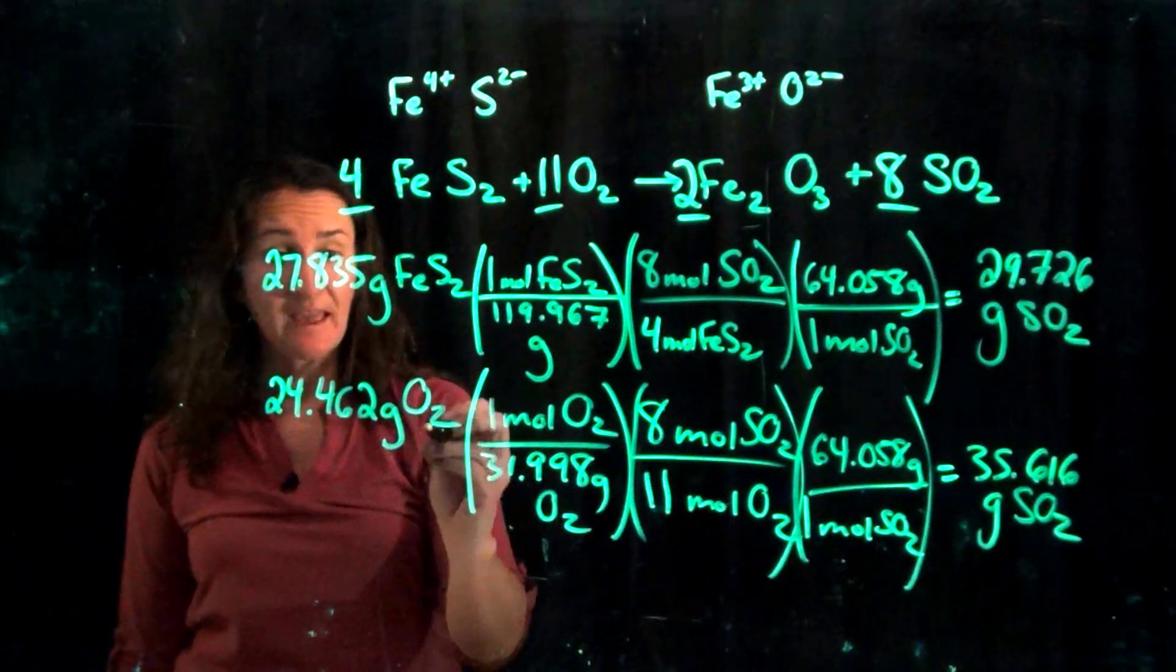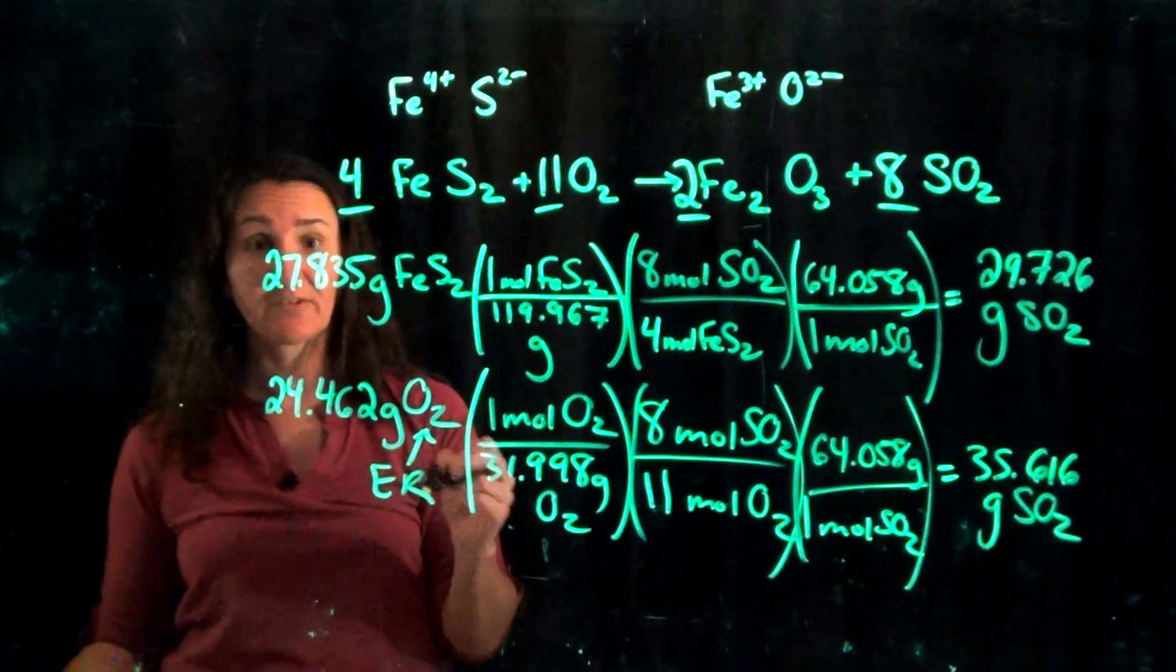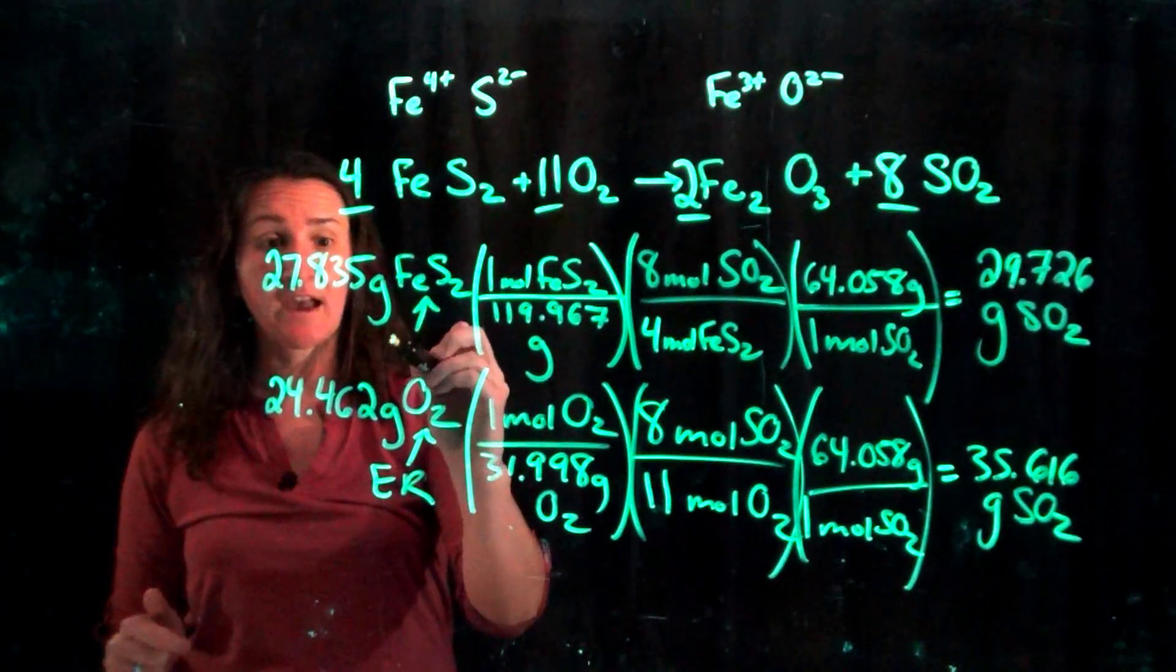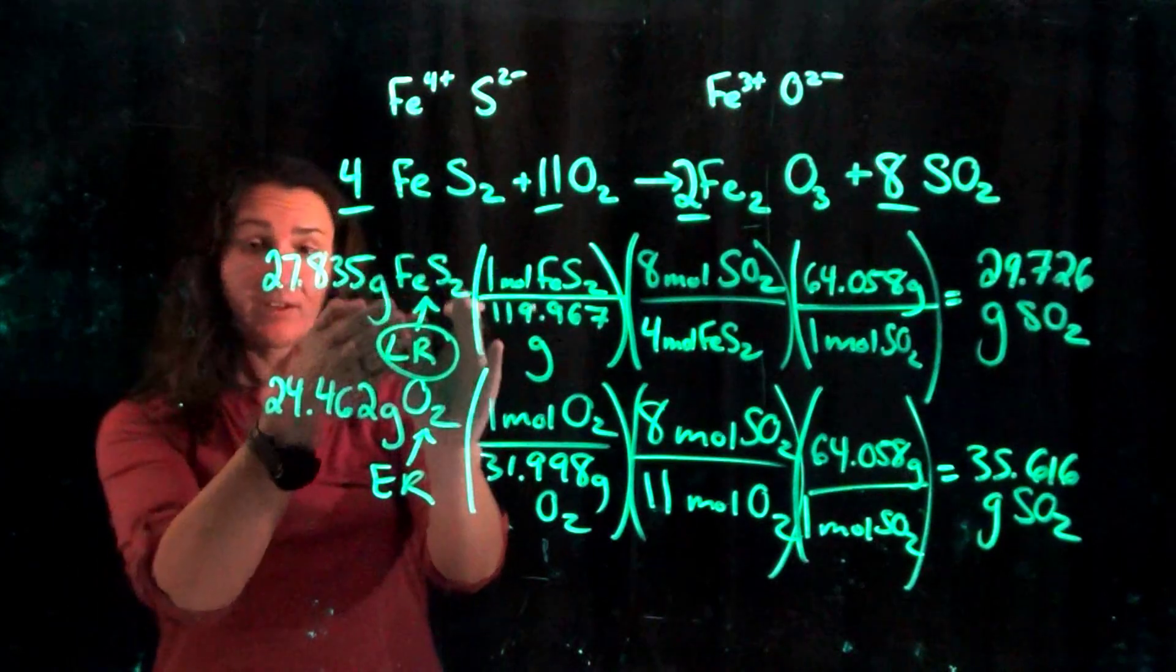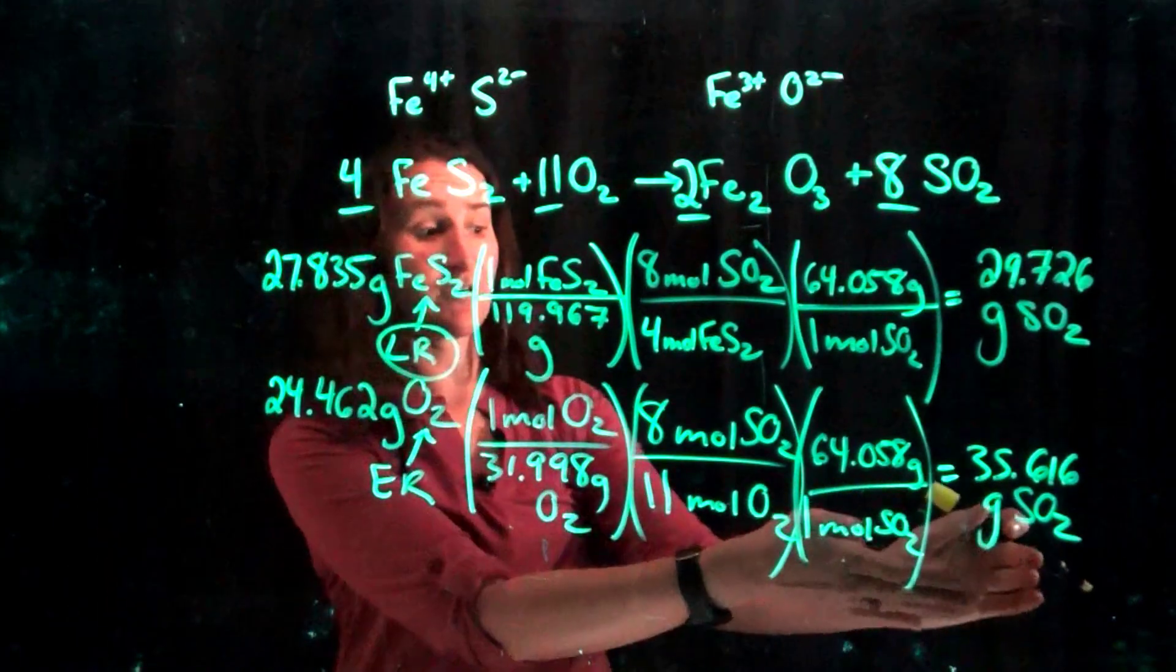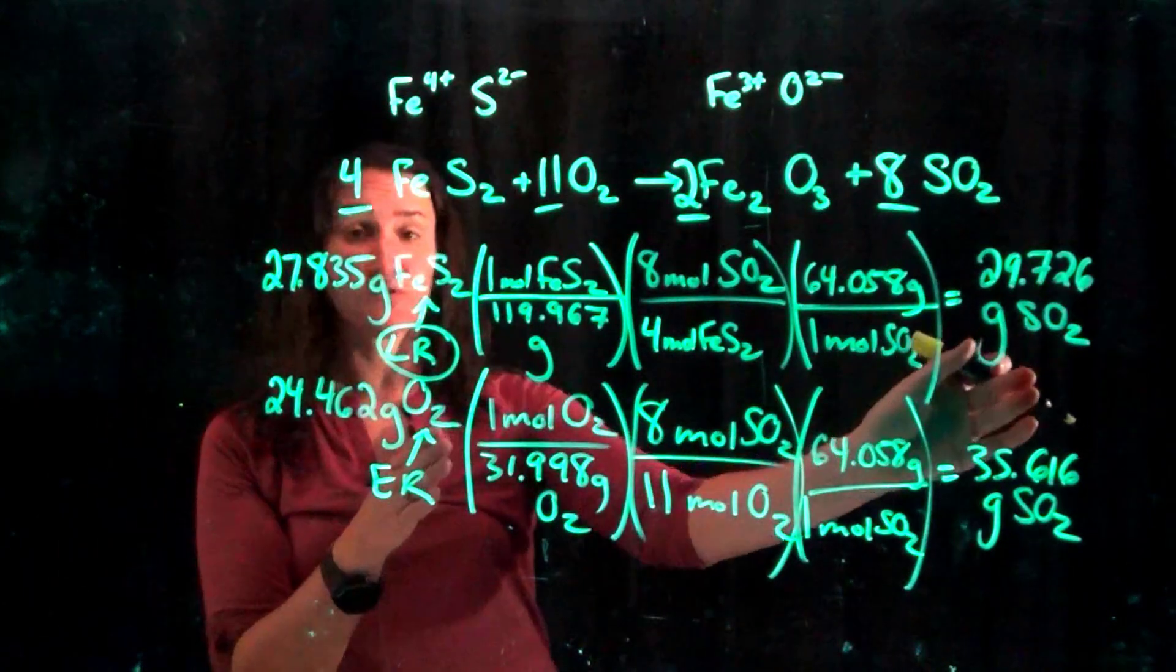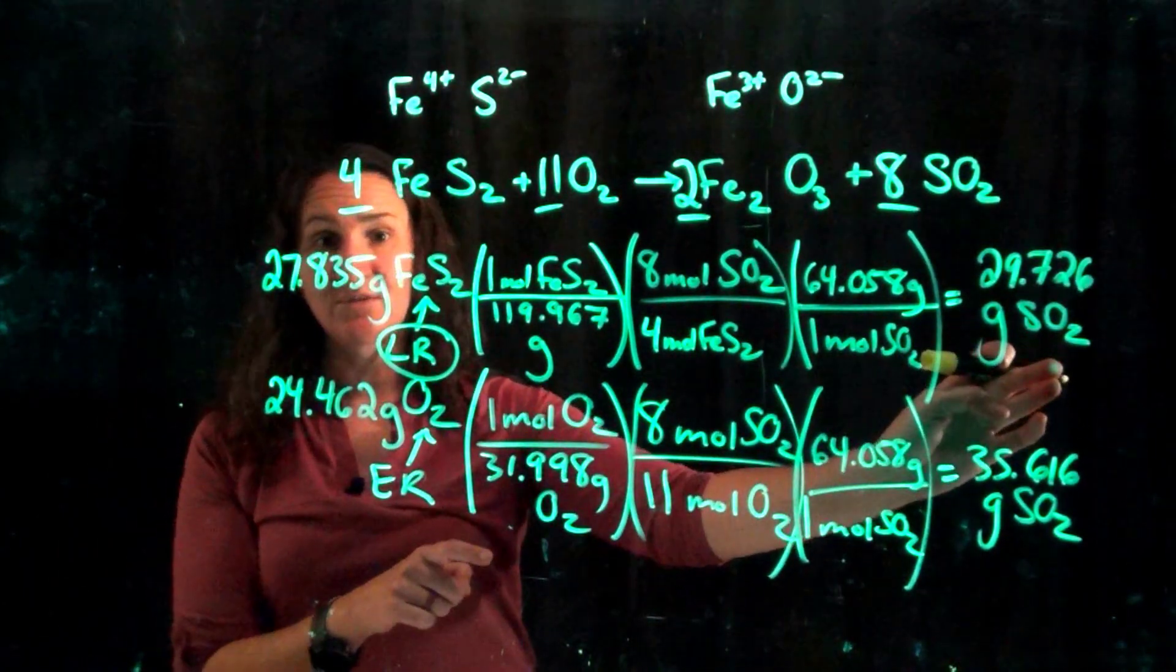No, because this is my excess reagent oxygen. Remember excess reagent, limiting reagent, those are always reactants. And then my iron for sulfide is my limiting reagent, and so I don't have enough iron for oxide to produce 35.6 grams of sulfur dioxide.